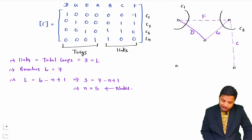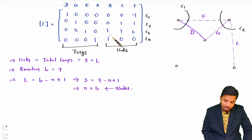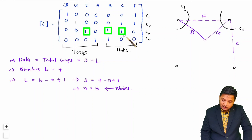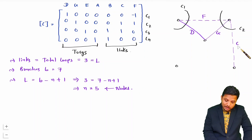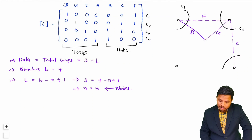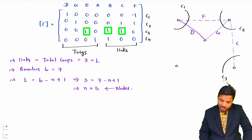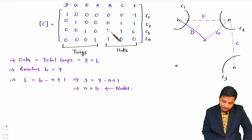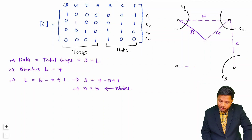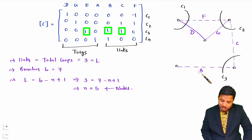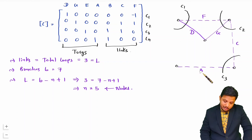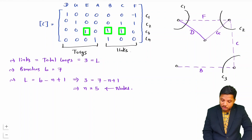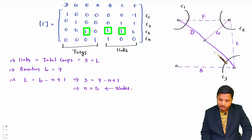Now let us check c3. If you observe, c3 is having b and c as links, and c is already covered here, so I should be providing c3 here. With c3 I already have c, so all I need to do is connect b — so b should be connected here. This is my b which is a link. And the twig with c3 is e, so the twig e should be connected towards center so it will not interfere in the graph.